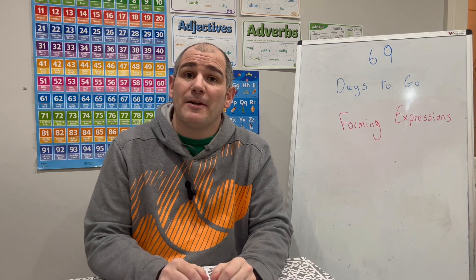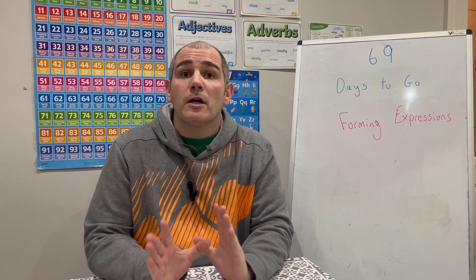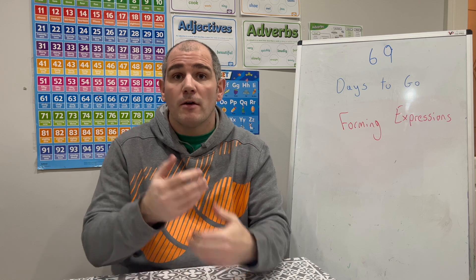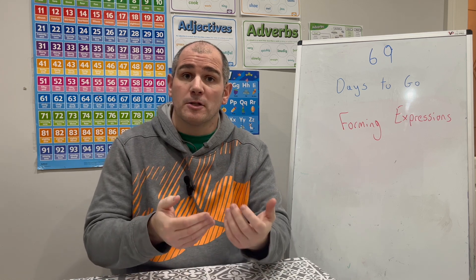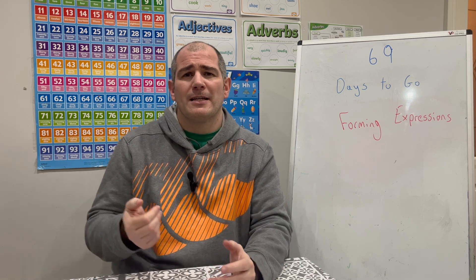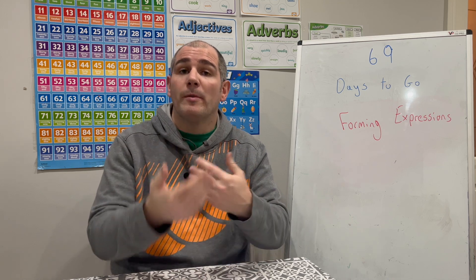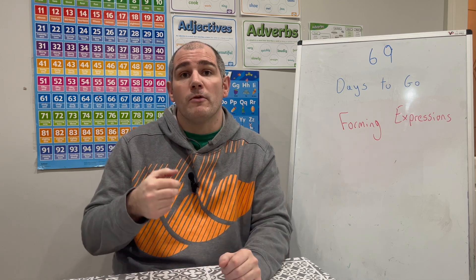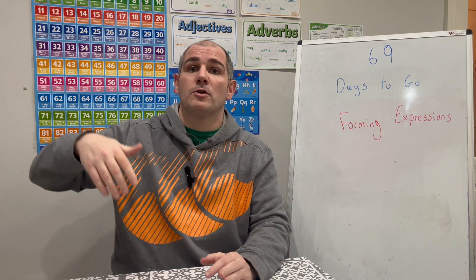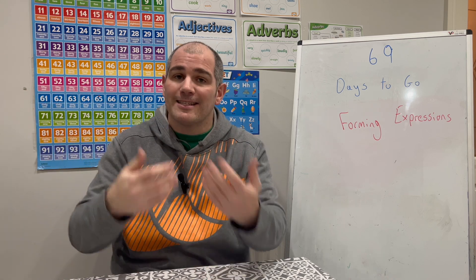Hi everyone, welcome to this GCSE foundation revision video. In this video we're going to look at forming algebraic expressions - how to form them. That may be quite useful particularly if you're given a shape and you've got to form an expression for its perimeter, or you've maybe got someone's age and then you're told that someone else is double their age and things like that.